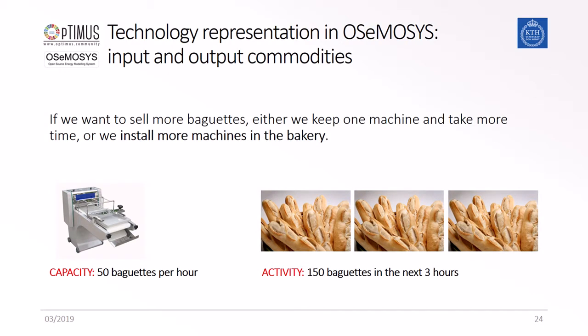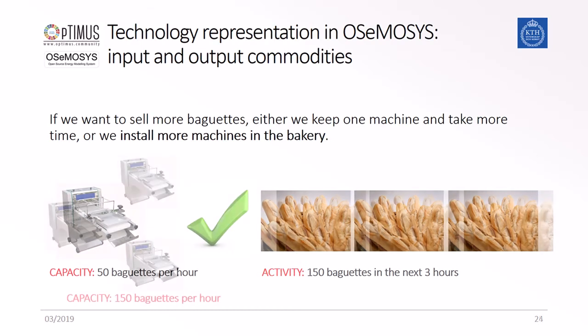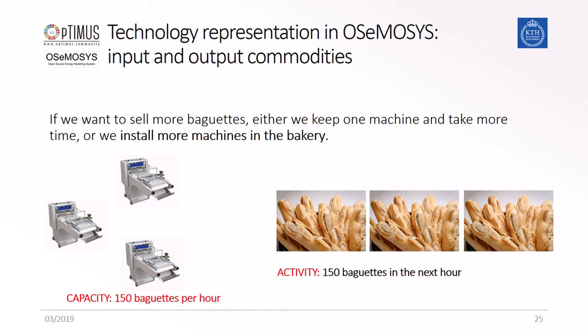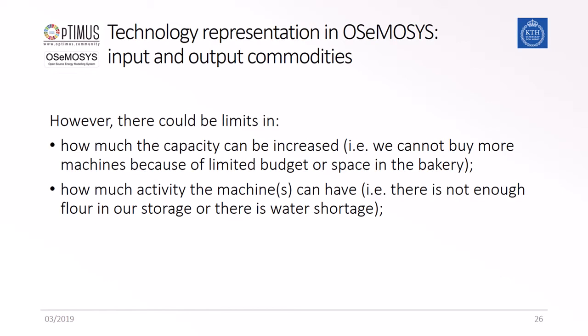If we want to produce more baguettes, we can either install more capacity to produce more per hour, or let the current machine run for more hours. If we install two more machines, the activity will be changed to 150 baguettes per hour. There are, however, often limitations to either the technology — for example, how much space or budget — or the fuel input, if there is not enough flour or water to supply the activity needed.